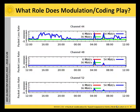In the next step we are asked what role does coding and modulation play here. In the IEEE 802.11a standard you can use different coding and modulation schemes which result in physical data rates from 6 megabits up to 54 megabits.